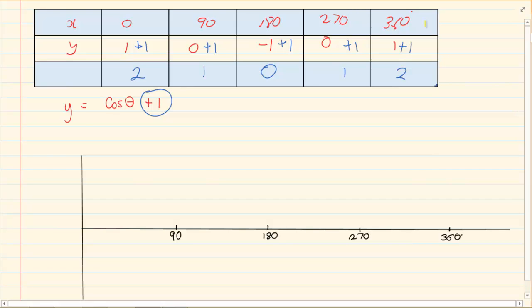Which coordinates we take? The original x because we didn't do an adjustment to it and the new y that we have adjusted. What do we have? We have 0 and 2, and then we have 90 and 1, 180 and 0, 270 and 1, 360 and 2. And that is our graph.